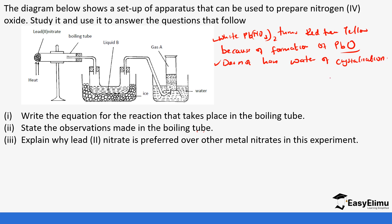The water of crystallization would react with the nitrogen dioxide to form acid, interfering with the collection. Since lead 2 nitrate does not have water of crystallization, nitrogen oxide is produced as purely as possible.